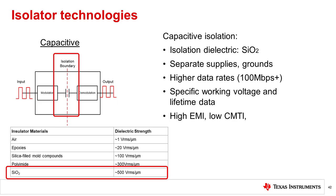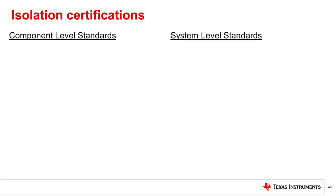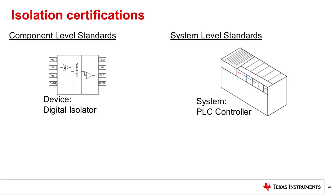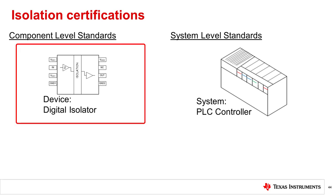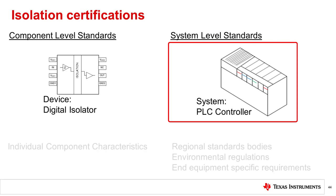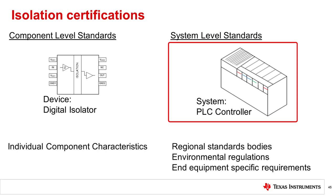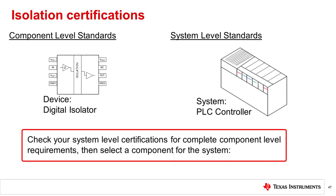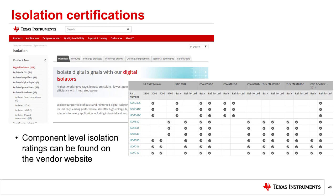To learn more about digital isolation technology and architectures, watch the Precision Labs video 'What is a Digital Isolator?' Component-level isolation requirements are most commonly determined by the high-voltage ratings of the system itself. It's important to note that while component isolation standards and system-level standards are complementary, they are not the same. Component-level standards pertain to the device and its level of isolation certification, while system-level standards are determined by industry standards bodies with guidelines that include environmental, regional, and international regulations, as well as end-equipment-specific requirements. To determine which level of component isolation is required for your system, start with the system-level certification requirements. Component-level certifications and ratings are available on the vendor websites.